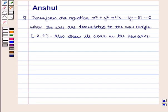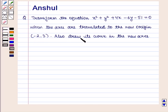Hello and welcome to the session. In this session we are going to discuss the following question: Transform the equation x² + y² + 4x - 6y - 51 = 0 when the axes are translated to the new origin with coordinates (-2, 3). Also draw its curve in the new axis.